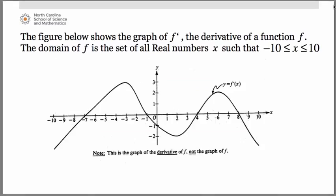What you see here is exactly how it appeared on the AP exam in 1989. We were given a figure that is the graph of f prime — the derivative of a function f. The domain of f is all real numbers, and the graph spans from negative 10 to positive 10. They make it very prominent that you are looking at the graph of the derivative, not the original. Even today, when similar problems appear on the AP exam, you'll see a note like this.